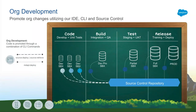We also introduced some updates this year — actually beta in Winter 19 — to VS Code extensions. These extension updates now let you interact with orgs besides scratch orgs, so that you can pull and push metadata within a sandbox. That's done via new commands: source deploy and source retrieve, which are part of the new Salesforce CLI updates. Once those changes are done, when you're at the release management step, you start using the MD API commands — MD API deploy or retrieve — to work against each of your sandboxes and your production org.